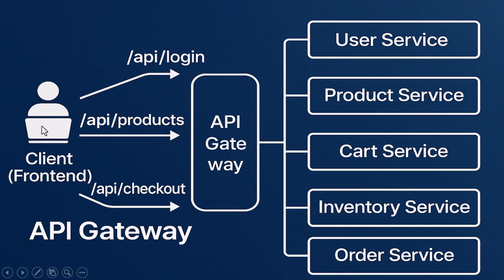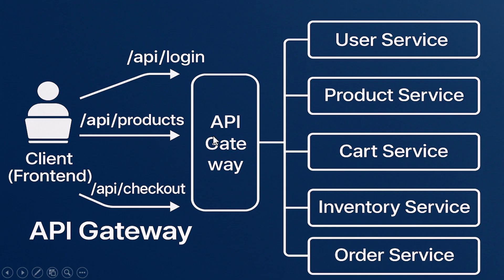Let's go back to that e-commerce example to see how this works in action. A customer opens your app, browses the catalog, logs in, adds items to their cart, and checks out. Here's what's happening under the hood. First, the front end sends a login request to the gateway, which forwards it to the user service. That service checks credentials and returns a token. Next, the customer browses products — the front end sends a request like /api/products, the gateway routes it to the product service, maybe adding a security header or logging the user ID for tracing.